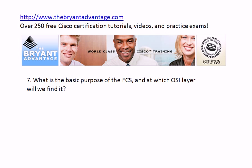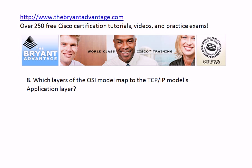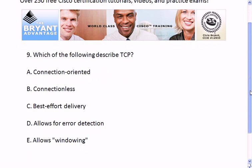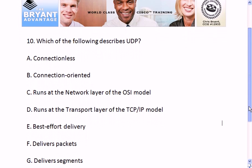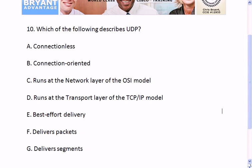And at which OSI layer will we find the FCS? Question eight: which layers of the OSI model map to the TCP/IP model's application layer? We have two major networking models, OSI and TCP/IP. Question nine: which of these phrases describes TCP? And finally, question ten: which of the following describes UDP?